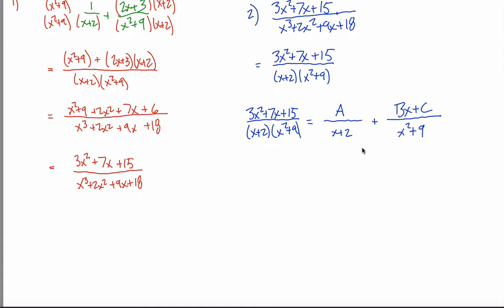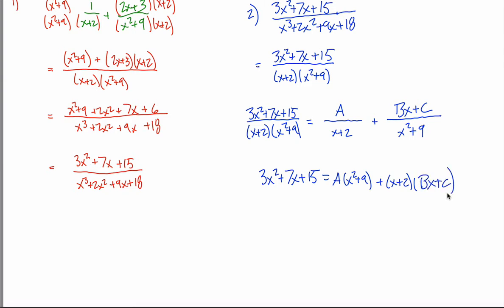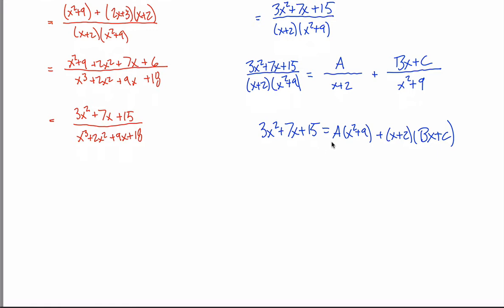Multiplying both sides by x plus two times x squared plus nine: on the left I'm left with three x squared plus seven x plus fifteen. On the right, the x plus twos cancel in the first term leaving A times x squared plus nine, and the x squared plus nines cancel in the second term leaving x plus two times Bx plus C. Now I have this equation to solve for A, B, and C.